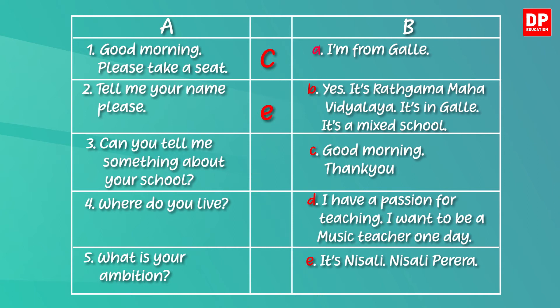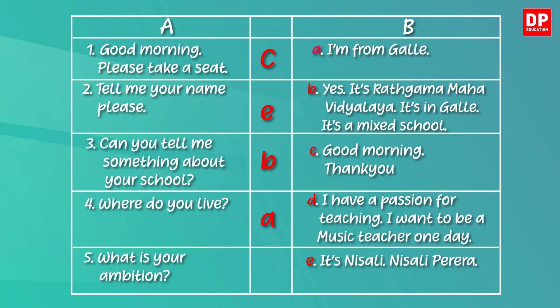What about the third one? Tell me something about your school. B is the matching response: it's Radhkamah Mahavidyalaya, it's in Gaul, it's a mixed school. Now the fourth — the examiner wants to know where Nisali lives. The answer is D — I am from Gaul. In the last one, the examiner is asking about Nisali's ambition. The answer is D — I have a passion for teaching, I want to be a music teacher one day. I hope you got all correct.